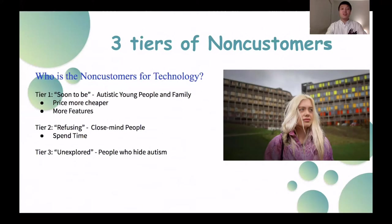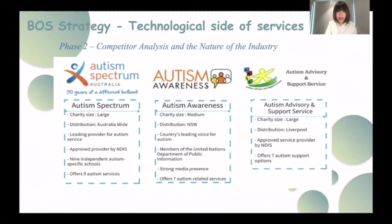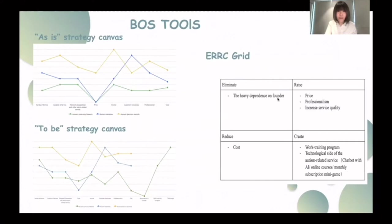My name is Shirley Wong. I will focus on our first recommended Blue Ocean strategy: creating the technological side of autism-related services. Based on our research, ACN doesn't believe it has direct competitors and tends to cooperate with other autism support providers. ACN provides services for free but is unable to offer more professional services compared to other charities like Aspect, which runs an autism-specific school to generate income.